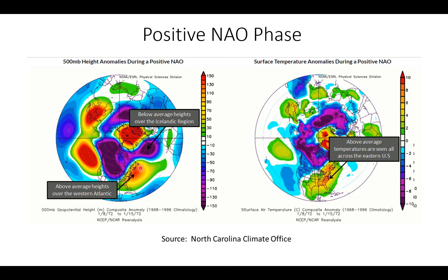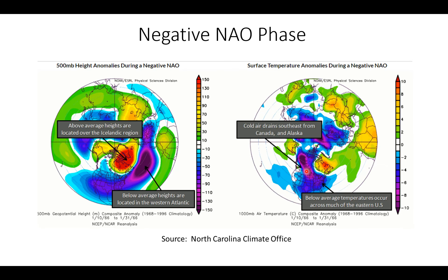With a positive phase NAO at 500 millibars — that's 18,000 feet above the ground — you see generally upper-level ridging across the western Atlantic, so above-average heights there. We get warmer temperatures associated with that ridging, with orange coloring indicating above-normal temperatures on the temperature anomaly chart. With that ridge during a positive NAO phase, you get milder temperatures across the eastern U.S. Meanwhile, the coldest temperatures are back into western Canada, the Pacific Northwest, and northern Plains states — generally colder air out over the western U.S.